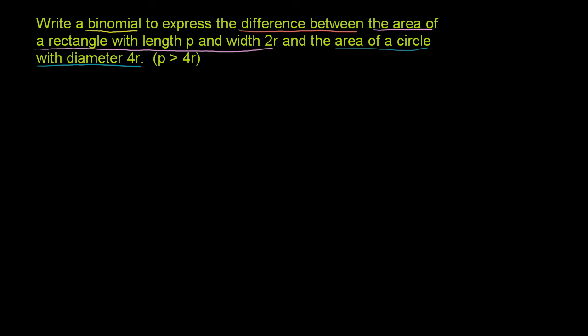First, the area of a rectangle. Let's say that is our rectangle with length p and width 2r. We know the area of a rectangle is length times width, so the area here is p times 2r, which is 2rp. That is the area of the rectangle.